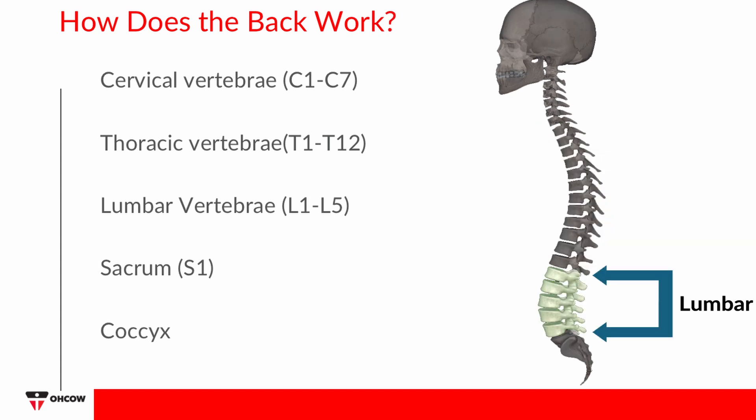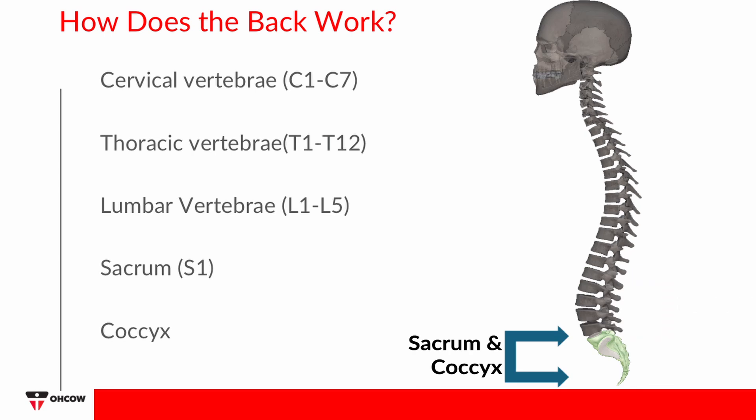Five lumbar vertebrae are the largest of the spine, supporting the weight of the upper body and protecting the spinal cord. The sacrum is a shield-shaped bony structure located at the base of the lumbar vertebrae, connected to the pelvis, forming the posterior pelvic wall and strengthening and stabilizing the pelvis. The coccyx, or tailbone, provides slight support for the pelvic organs but is a bone of little use.